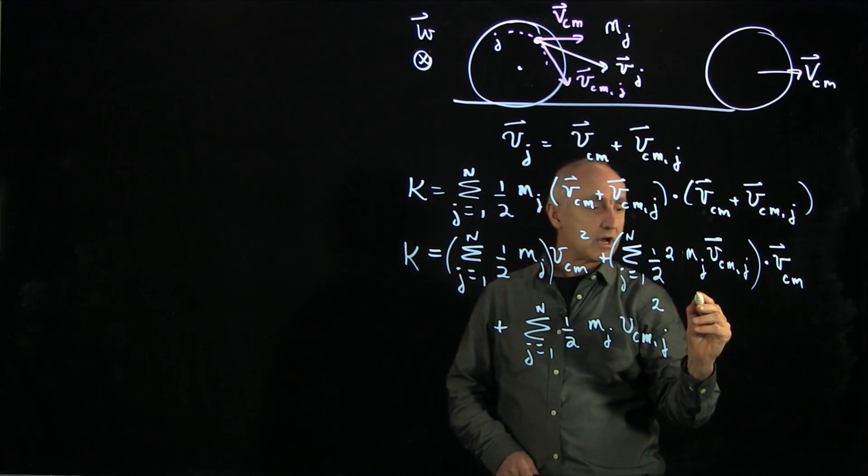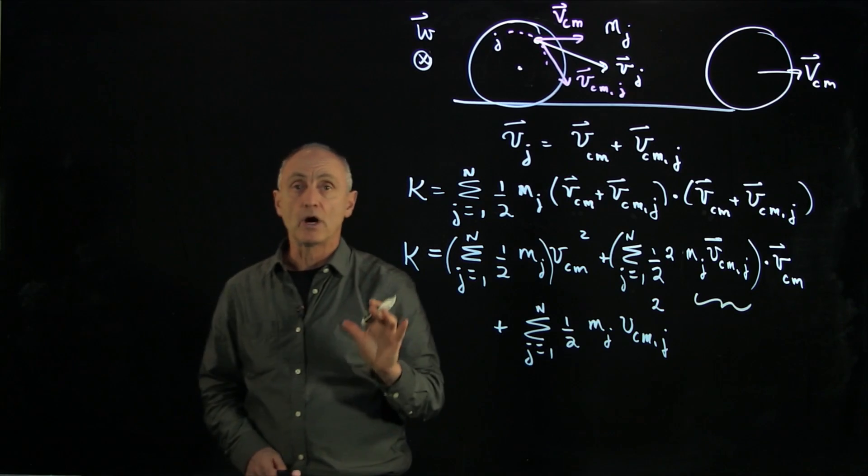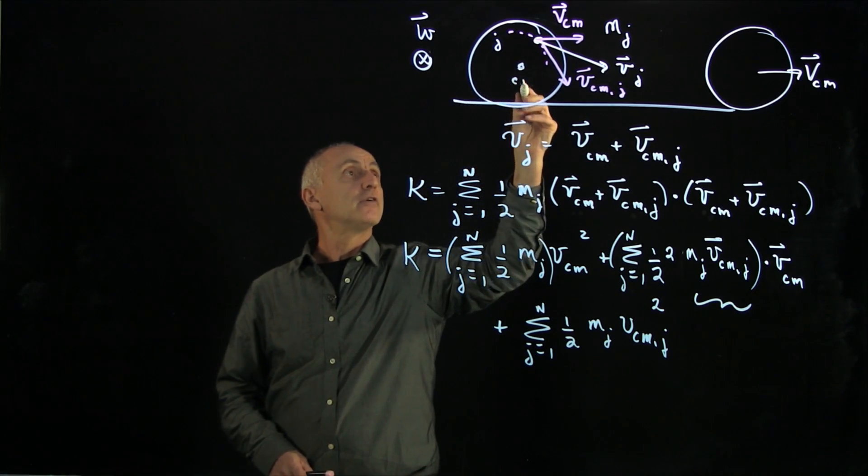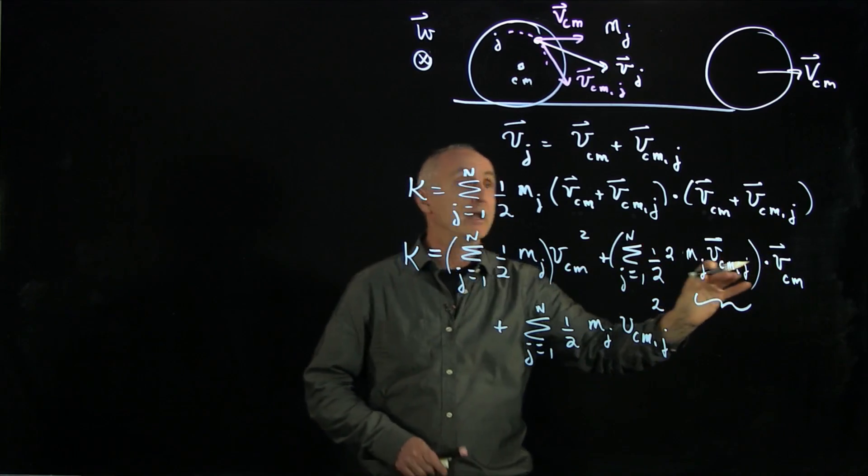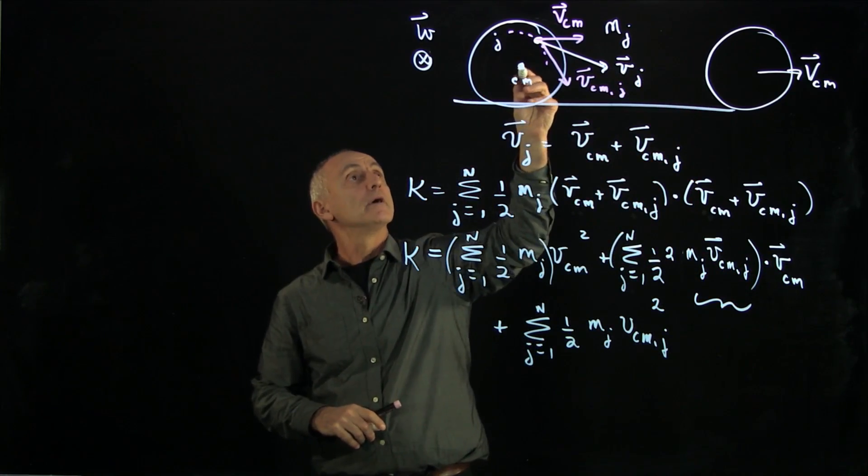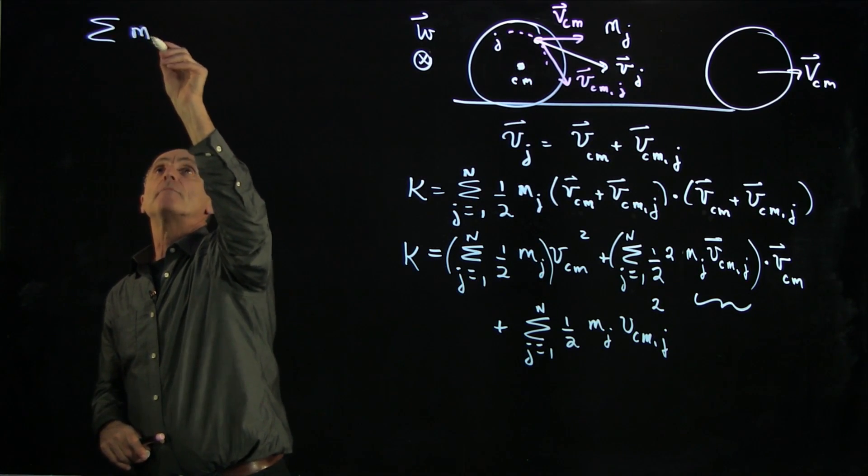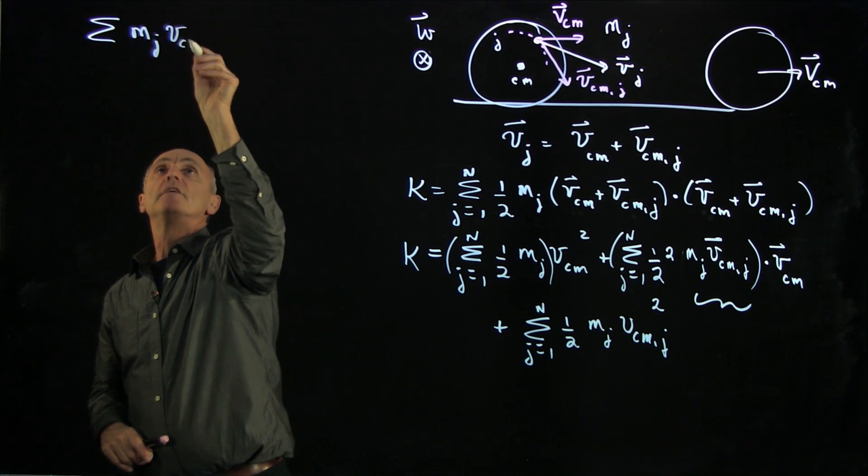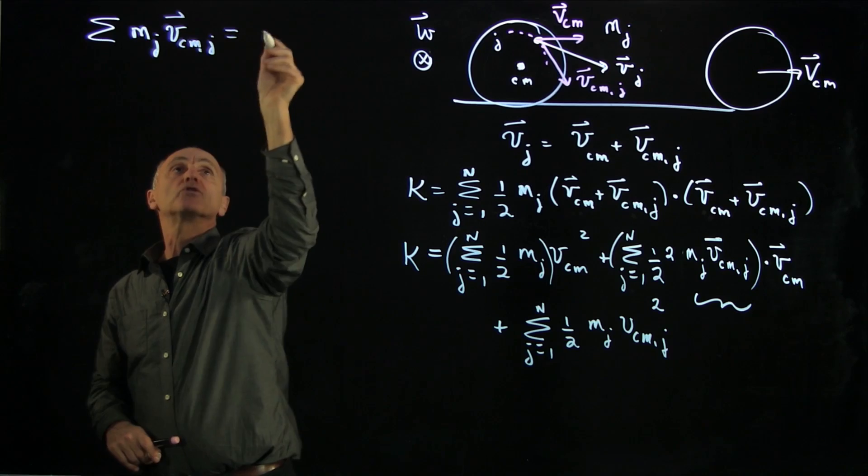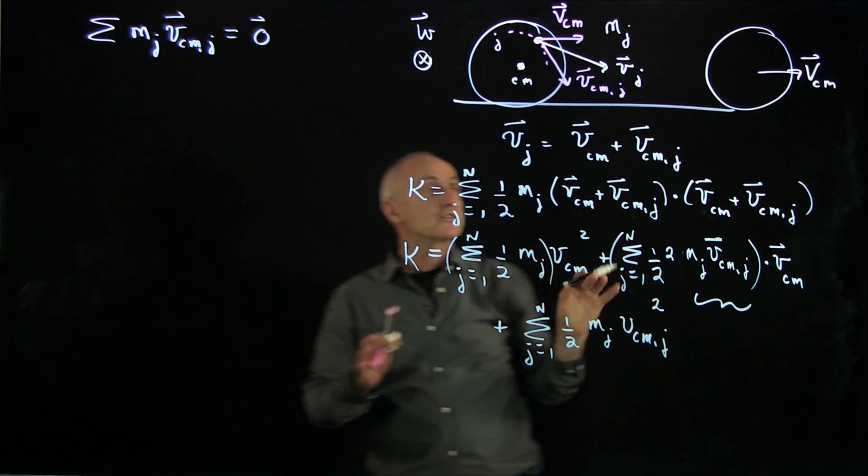But let's focus on this term right here, because recall from our video on the center of mass that the definition of the center of mass reference frame, so if you're moving in the center of mass, that in the center of mass reference frame, the sum of mj vcmj is equal to 0.